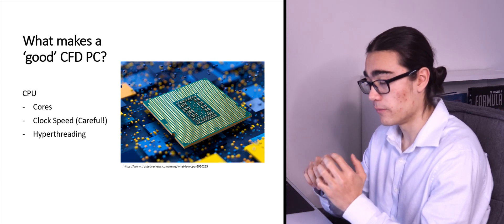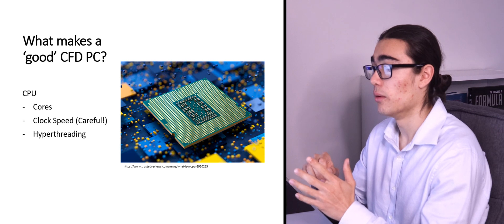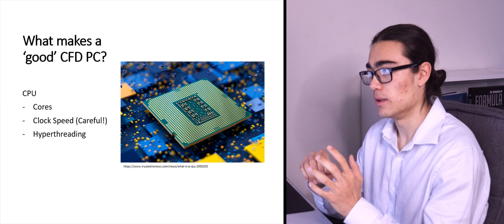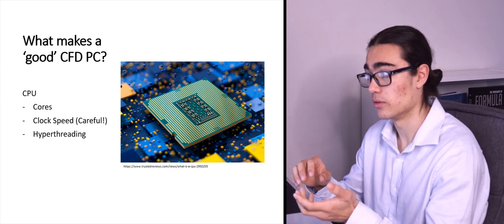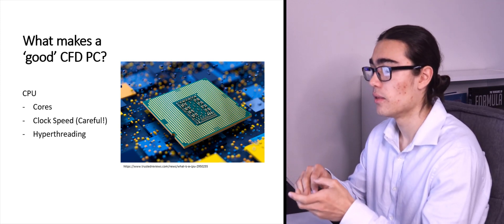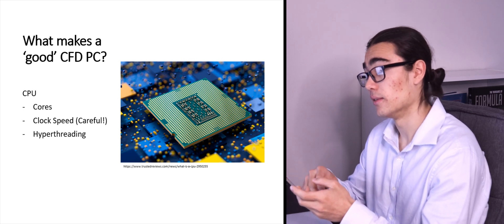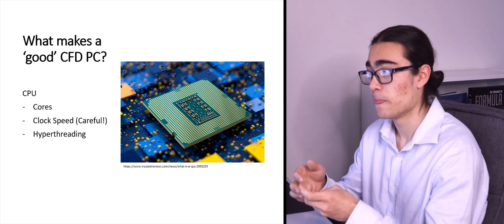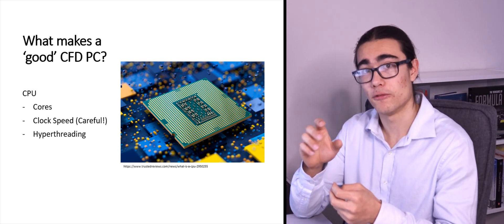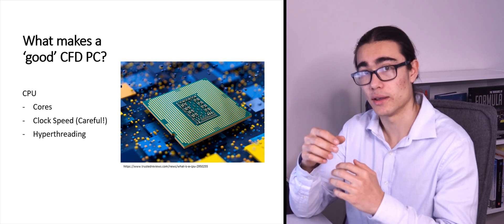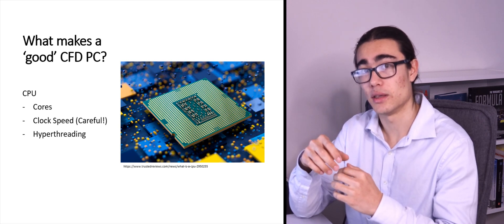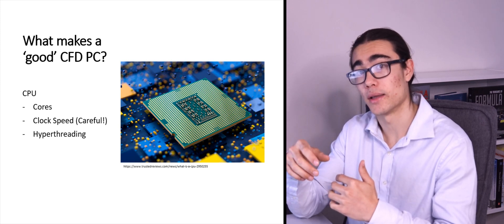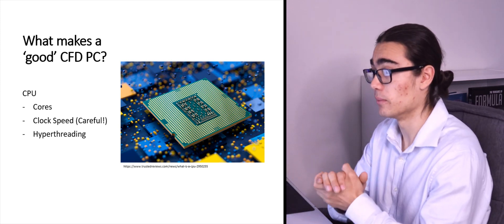There's a very important relationship with cores versus CFD runtime which we'll go through a bit later. As you increase cores you are going to decrease your runtime. The same thing with clock speed, except it's a different relationship. We have to be careful because clock speed isn't perfect across different architectures — the actual number of operations per second might be different across different architectures.